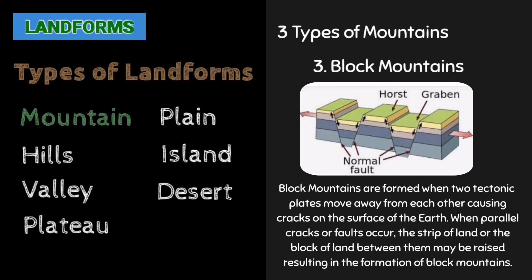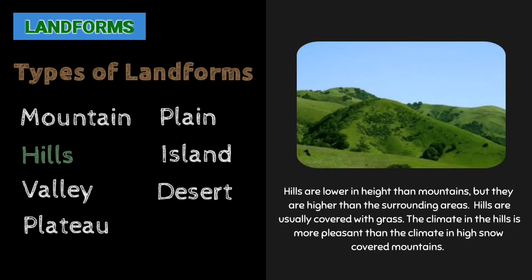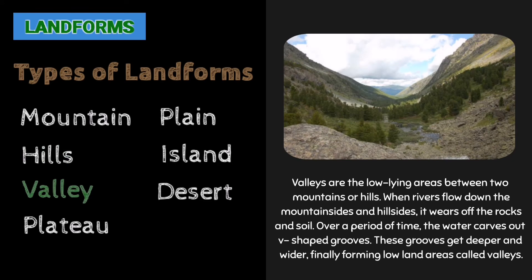Where parallel cracks or faults occur, the stream of land or the block of land between them may be raised, resulting in the formation of block mountains. Hills are lower in height than mountains, but they are higher than the surrounding areas. Hills are usually covered with grass, and the climate in the hills is more pleasant than in high, snow-covered mountains. Valleys are the low-lying areas between two mountains or hills. When rivers flow down the mountains, they erode the rocks and soil. Over time, the water carves V-shaped grooves that get deeper and wider, finally forming low-lying areas called valleys.